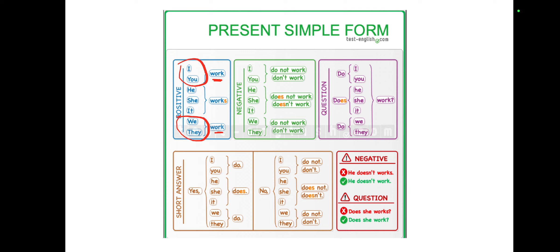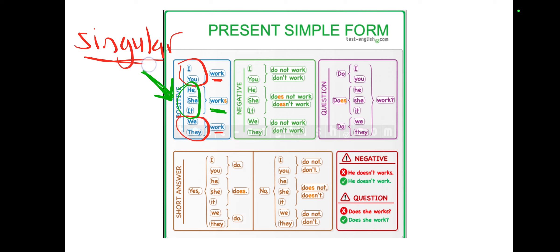Whenever you see he, she, or it, you have to add 's' at the back. One more thing to keep in mind for positive sentences: you need to remember singular. Singular means anything that is just one — one person, one place, one animal, or one thing. For example, 'dog' is just one.